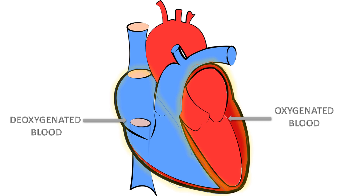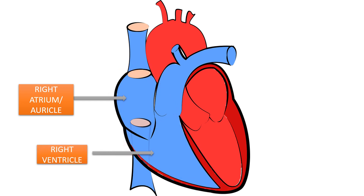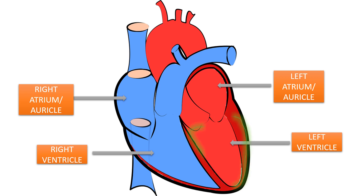Internally, the heart is divided into four different rooms called four chambers. The upper right side is called the right auricle or right atrium. The lower right side is called the right ventricle. The upper left side is called the left atrium or left auricle, and the lower left side is called the left ventricle.